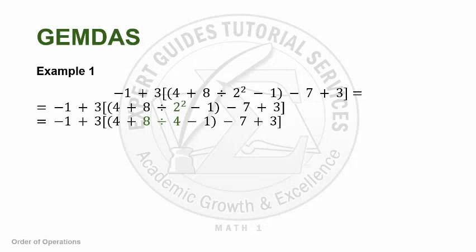The next thing we should notice is multiplication, division, addition, subtraction. But since multiplication and division come before addition and subtraction, let's check if there's multiplication or division. We have 8 divided by 4, so we do that first. Our equation becomes negative 1 plus 3 times the quantity 4 plus 2 minus 1 minus 7 plus 3.